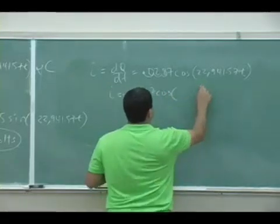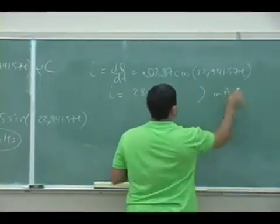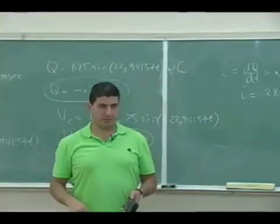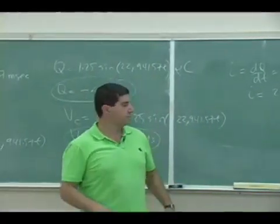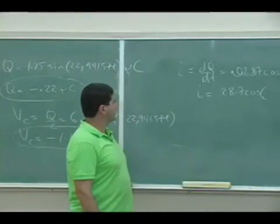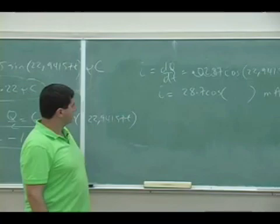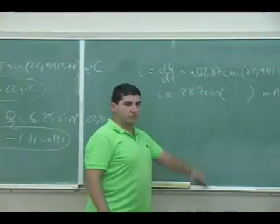is cosine of that number milliamps. So it's going to vary as a milliamp, right? 28.7. Does that make sense? I just went over three spaces.